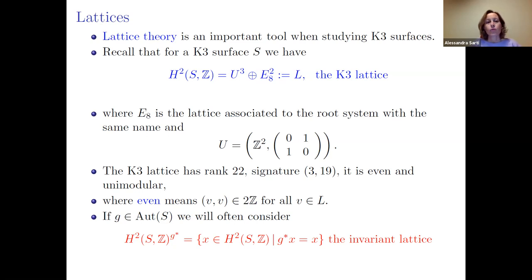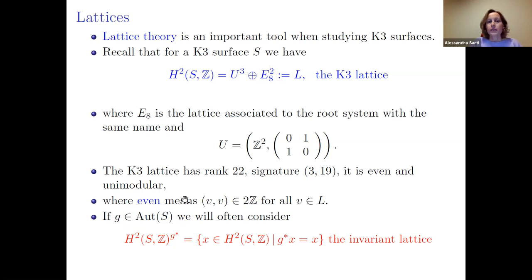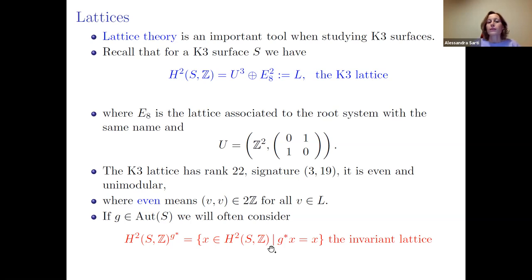E₈ is the lattice associated to the root system with the same name. The K3 lattice is even, meaning the square of any element lives in 2ℤ. When you have an automorphism of S, it induces an action in cohomology, and one can compute the invariant lattice — all cycles in H²(S,ℤ) that are invariant by the action of g.